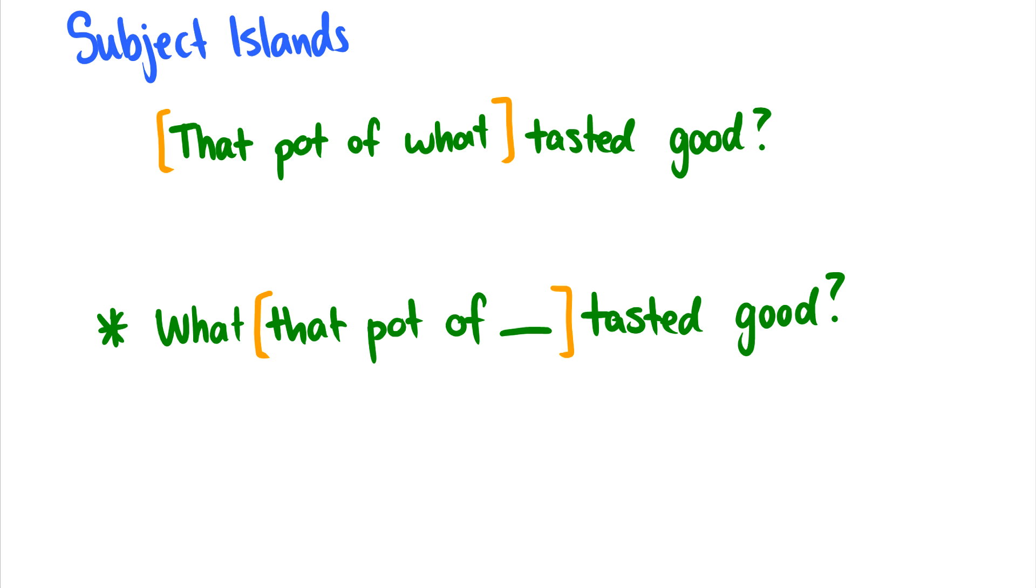The third type are subject islands. So for instance, instead of just saying what tasted good, we could maybe know something about what that is, that subject. So we know it's a pot of something, but that pot of what tasted good? Well, let's try to move that wh-word out: What that pot of tasted good? That's not okay.